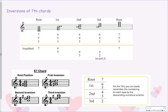Now we have to talk about inversions of 7th chords. Take out some paper and jot these down. For root position 7th chords, the figured bass is 7-5-3, indicating intervals of a 7th, 5th, and 3rd above the lowest note. Simplified, we just see the 7. If you see a 7 in the figured bass, that indicates a 7th chord in root position.